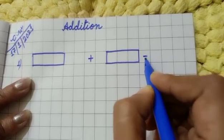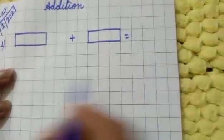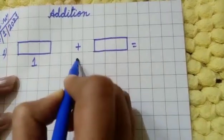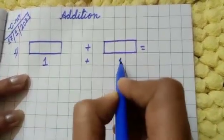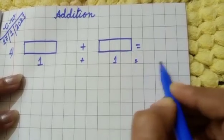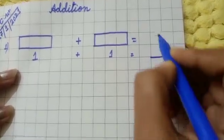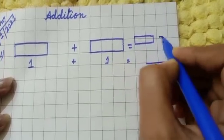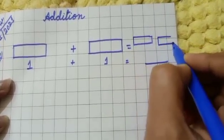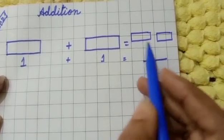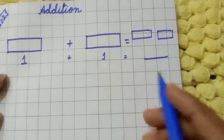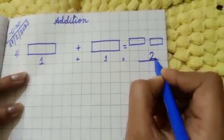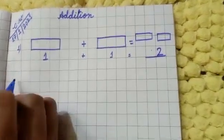Equal to — now you have to write. Here is one, so you write one, then plus one, equal to how many. You draw your rectangles: one rectangle, two rectangles. There are two rectangles, so you will write two here.